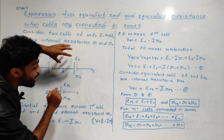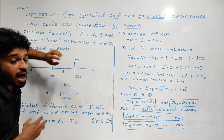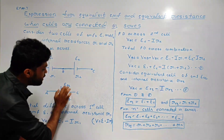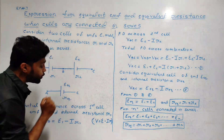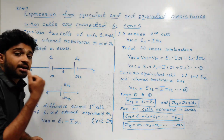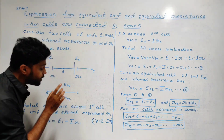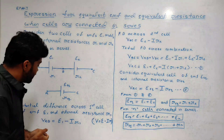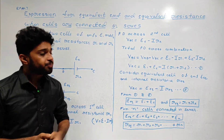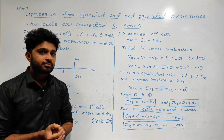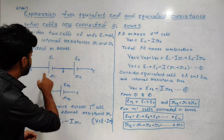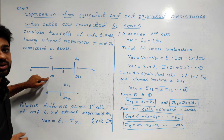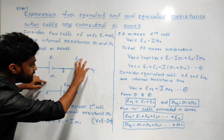We are using the equivalent cell. The equivalent cell has EMF Eq and internal resistance Req. We will start with the derivation. The first cell has EMF E1 and internal resistance R1.